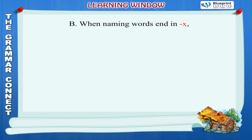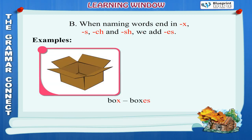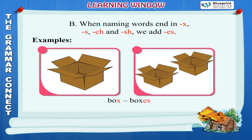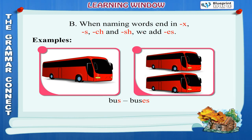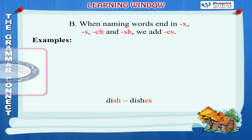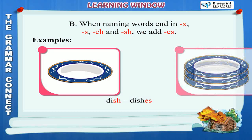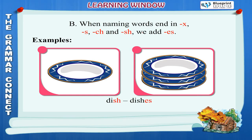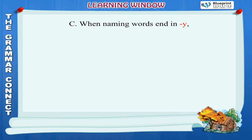Rule B: When naming words end in X, S, CH and SH, we add ES.